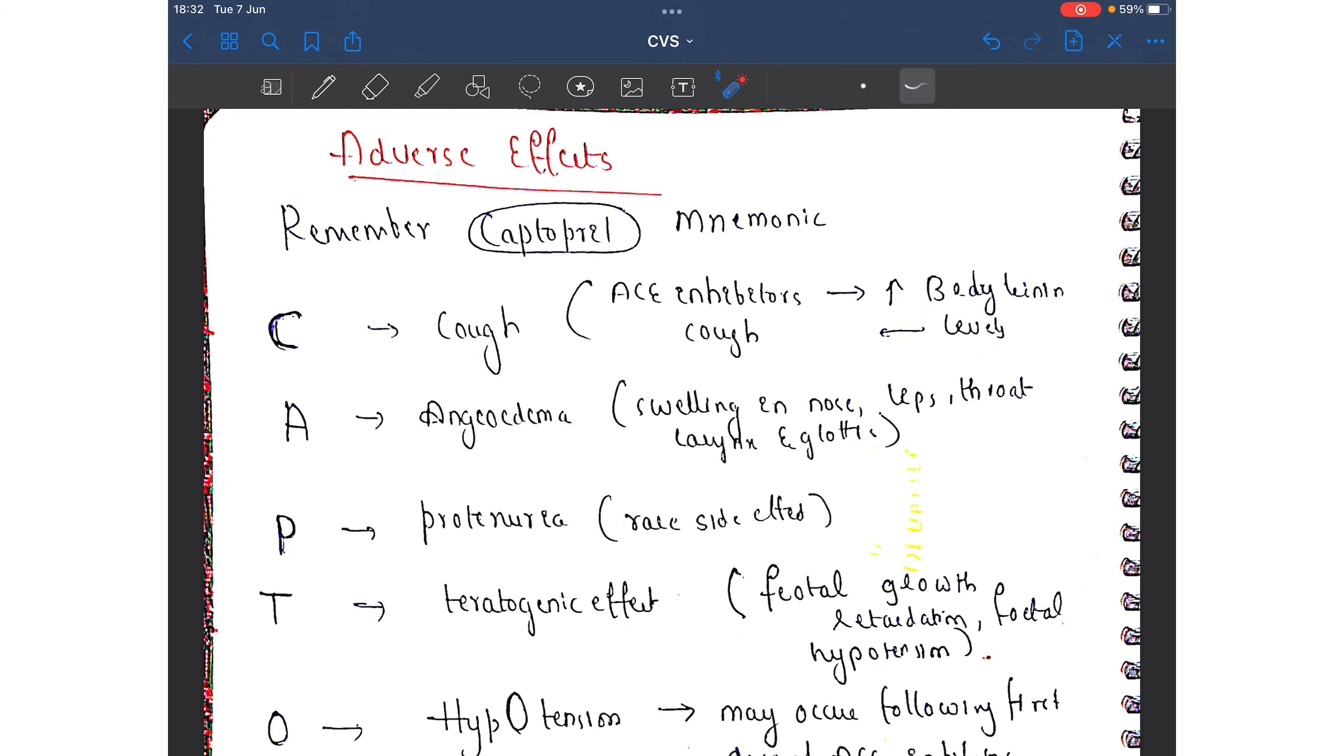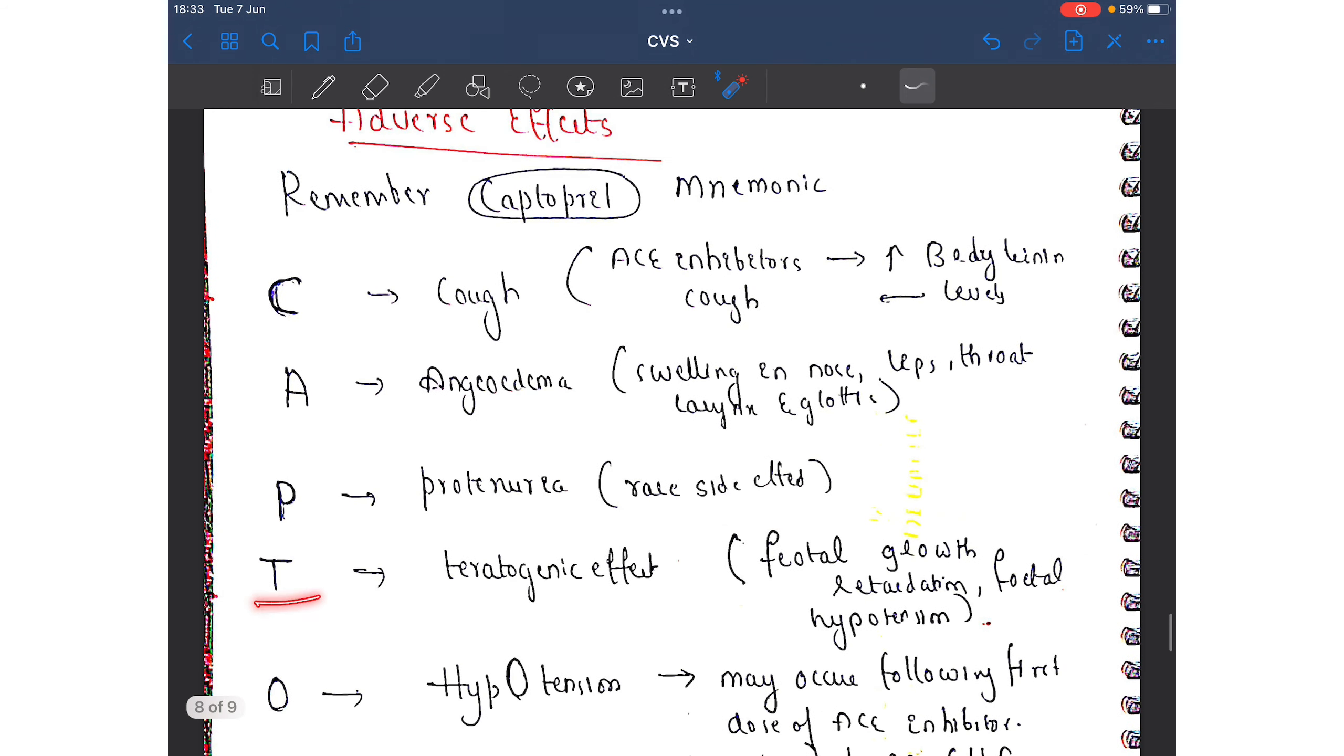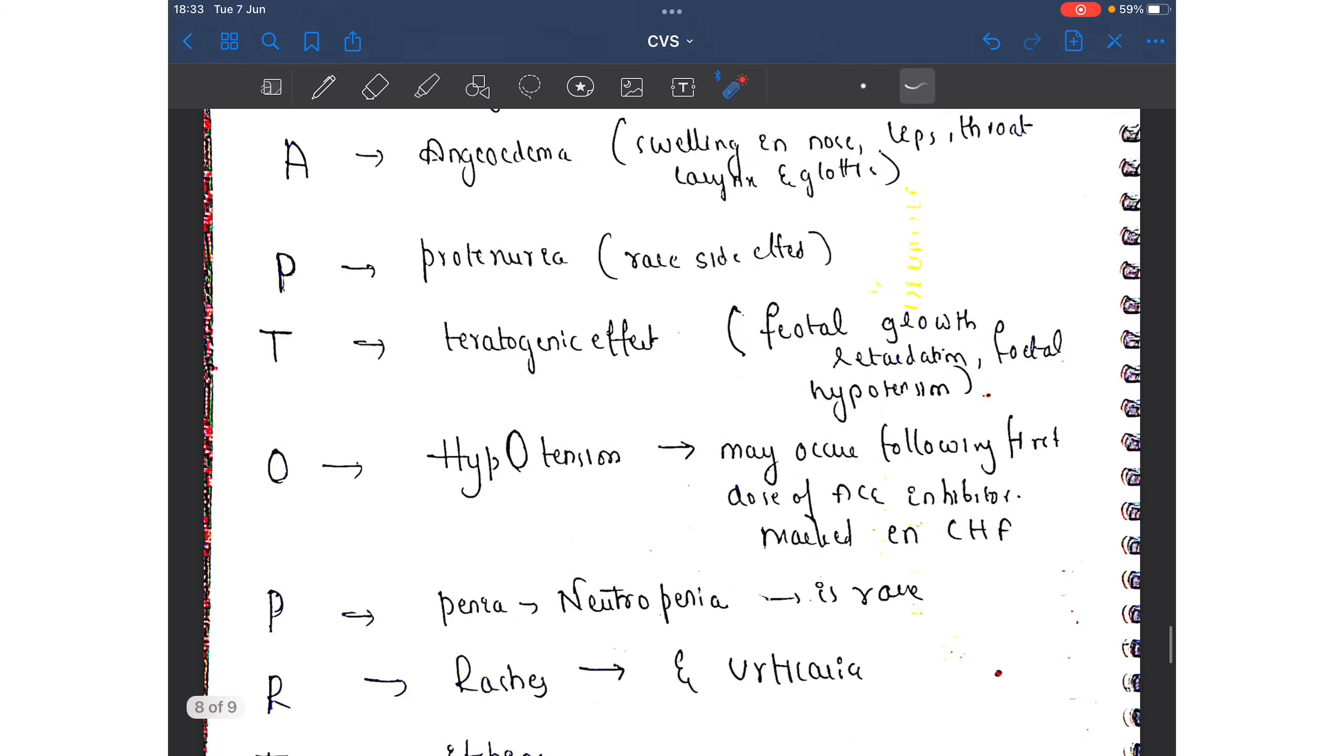Second adverse effect is angioedema, swelling in the nose, lips, and throat. Third is proteinuria. P stands for proteinuria. It is a rare side effect. The important side effect is teratogenic effect: fetal growth retardation occurs, fetal hypotension may occur. That is why they should not be given in pregnancy.